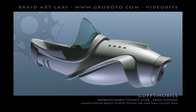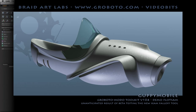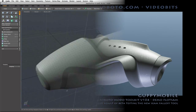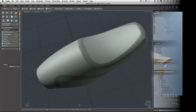Hi everybody. This is a little teaser preview of a new feature in the Grabato Tomoto toolkit. It's a feature that allows you to create fall-off weight maps along the length and across the width of Grabato's seam strips.